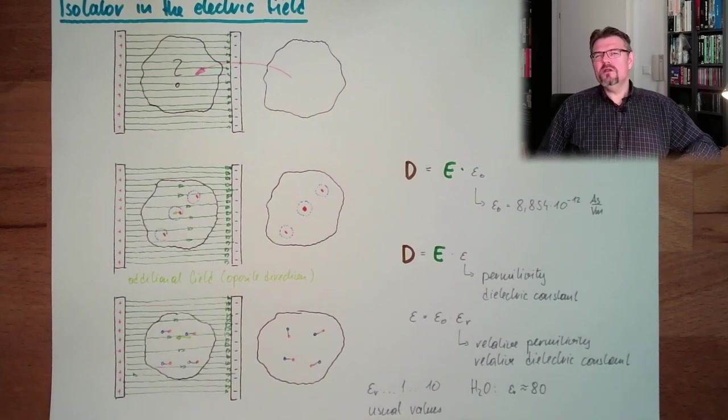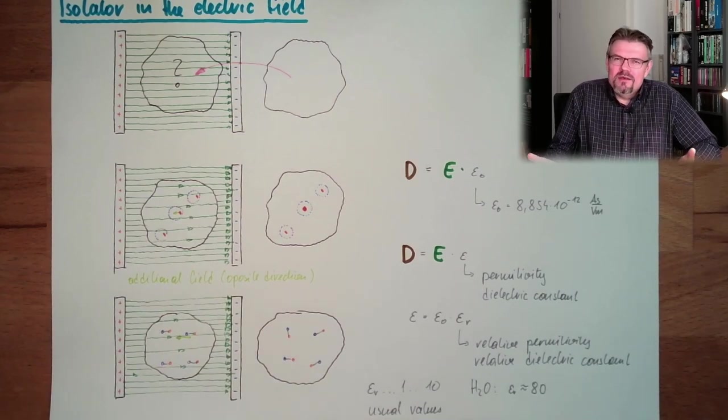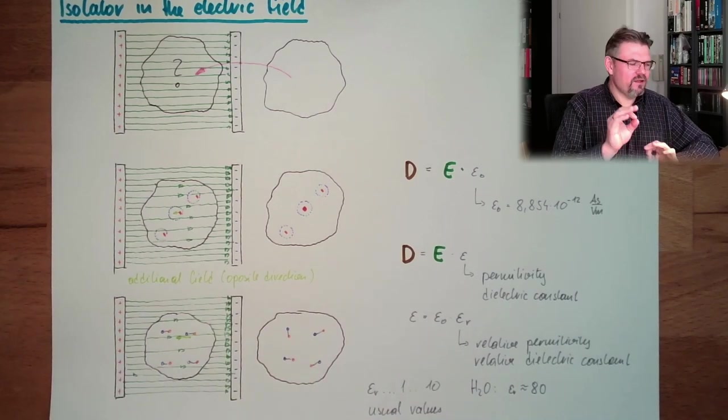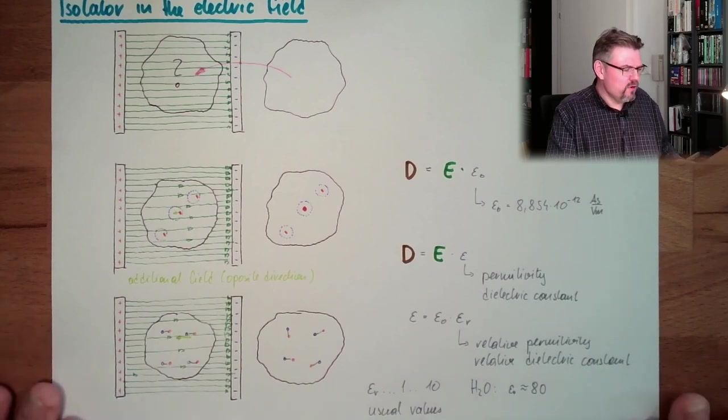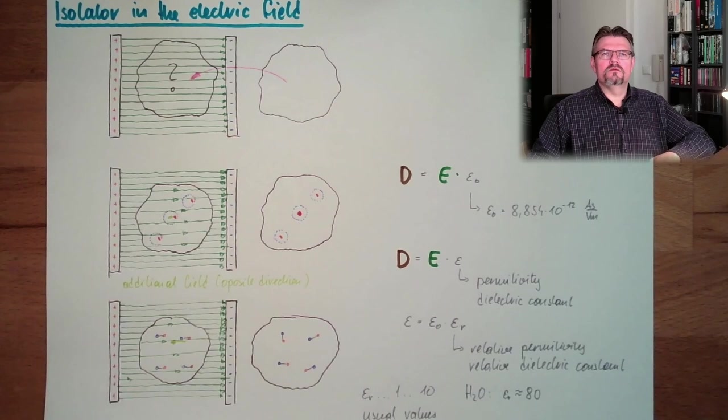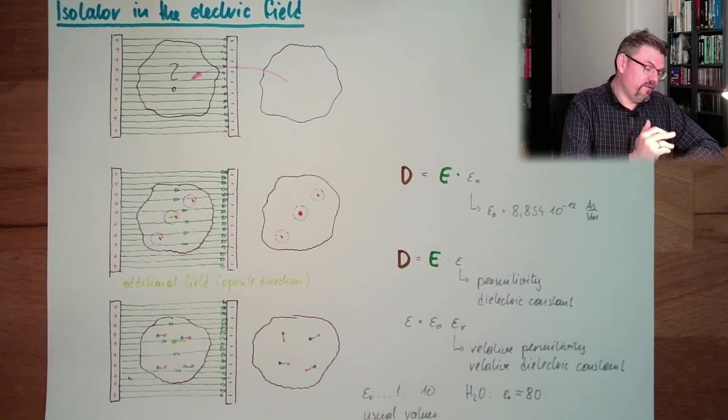Now the question is, is this good? Is it good? Now we're talking about the force effect of electric field and we're calculating and drawing the electric field. And now I tell you, if you place metal in there, then the electric field is weakened. It's funny, the additional field, the original field is weakened.